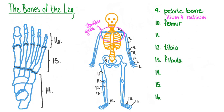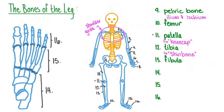Like the lower part of the arm, the lower part of the leg possesses two bones. The larger of these is called the tibia, also sometimes referred to as the shin bone. The smaller bone, found on the outer side of the lower leg, is called the fibula. The knee joint also possesses a bone that has no equivalent in the arm: a small, round bone in the front of the knee called the patella, or kneecap. The patella helps ensure that our knee joint bends in one direction and not the other.